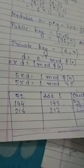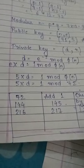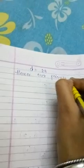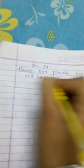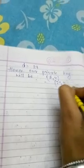So the value of D is 29. The private key will be D and N equals 29 and 91.